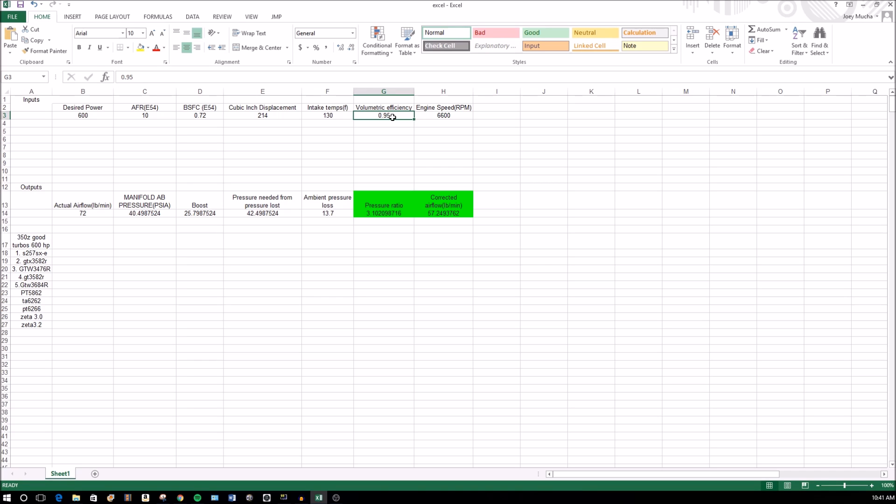Volumetric efficiency, again this is something you just have to estimate. It's different from car to car. This might be a little high, a little low. You change this and everything else changes. Engine speed - my max, I don't care if my turbo really falls on its face at like 6600 rpm.